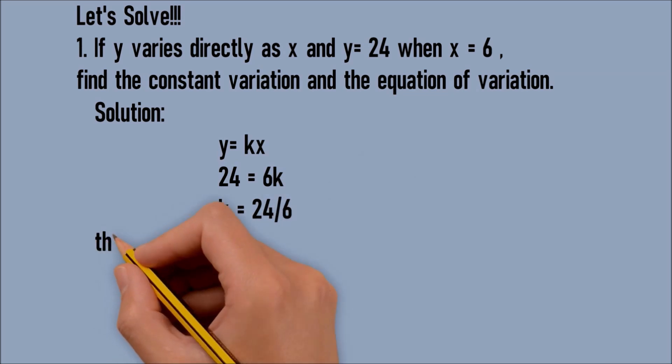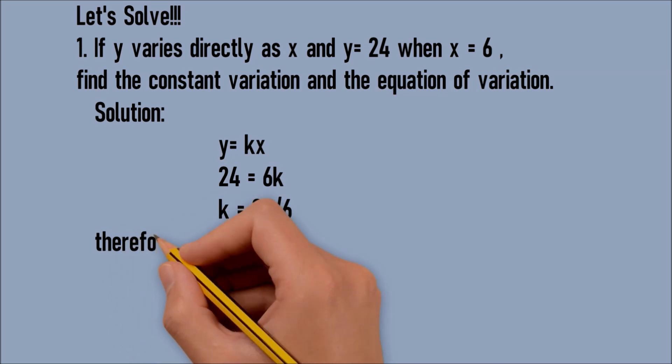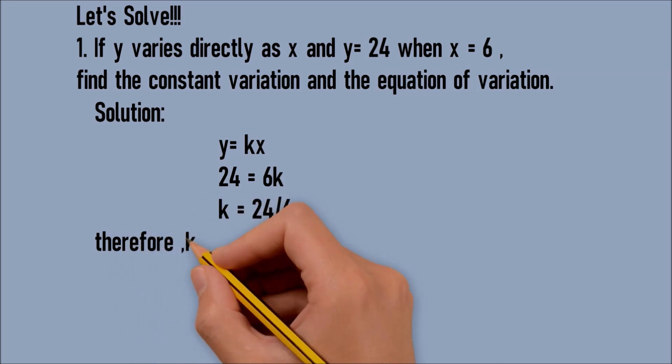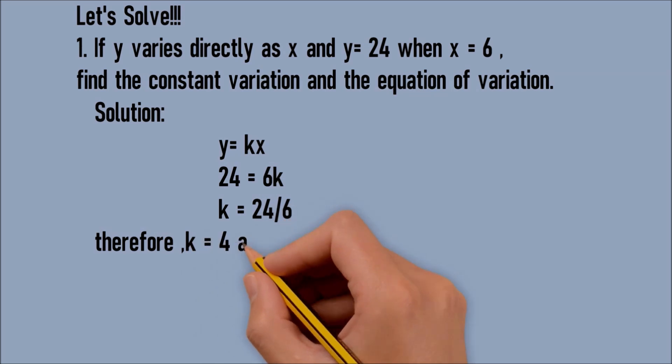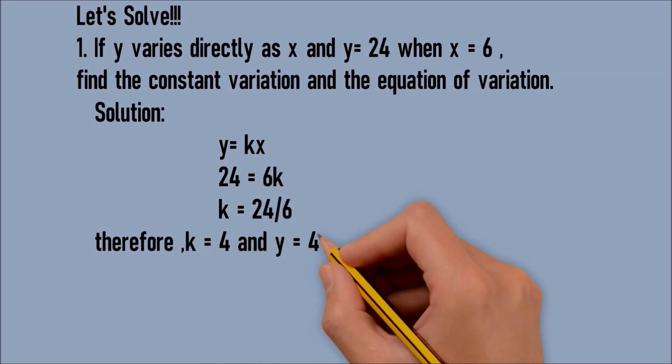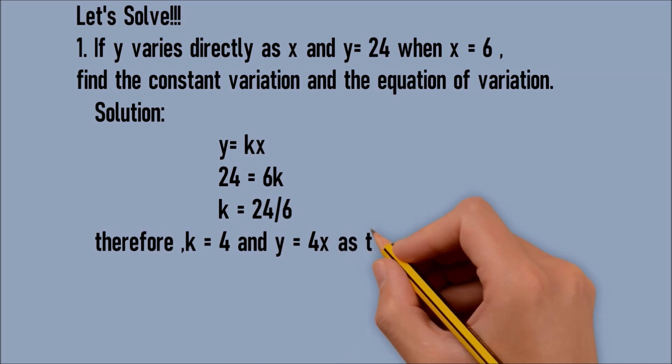So it will become 24 is equal to 6k. Divide both sides by 6. So k is equal to 24 over 6 or 4. Therefore, constant of variation is 4 and the equation of variation is y equals 4x.